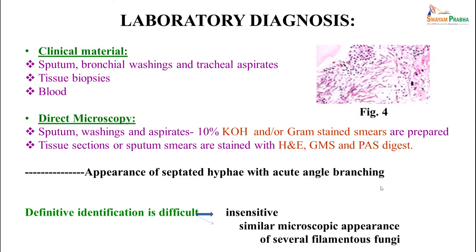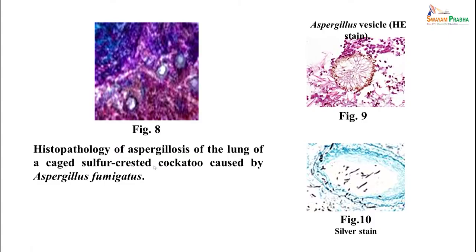For laboratory diagnosis, samples include sputum, bronchial washings, tracheal aspirates, tissue biopsies, or blood. Direct microscopy using 10% KOH and Gram stain is performed, and tissue sections are stained with H&E, GMS silver staining, or PAS staining. Septate hyphae with acute angle branching are the typical microscopic appearance. Definitive diagnosis can be difficult because microscopic sensitivity is low and similar appearances may occur with other filamentous fungi. Histopathologically, the characteristic appearance of A. fumigatus and vesicle-like structures with black-stained hyphae can be seen on silver staining.